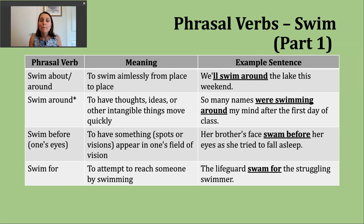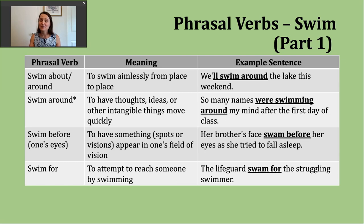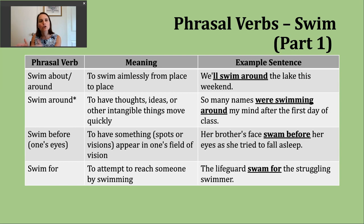A second way to use 'swim around' has nothing to do with water. This meaning is to have thoughts, ideas, or other intangible things move quickly — like thoughts swimming in one's head, moving around really quickly as if in water. An example: 'So many names were swimming around my mind after the first day of class.' This can happen to teachers as they meet many new students at once — multiple students with the same names can make it hard to remember everyone. Here, 'were swimming around' is an example of the past progressive, talking about an action in progress during a point in the past.